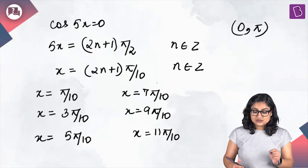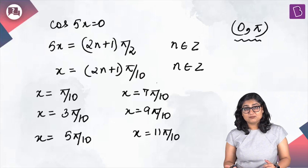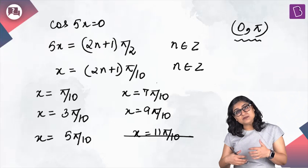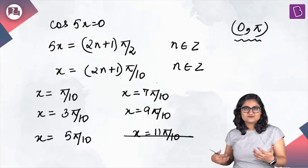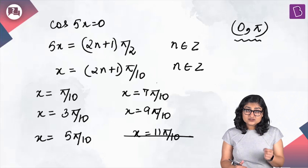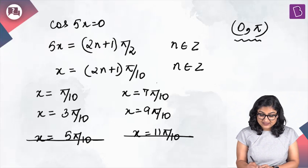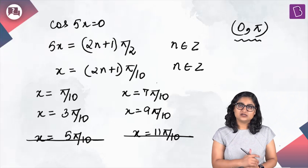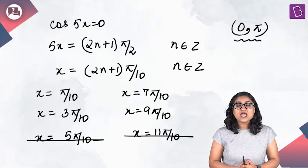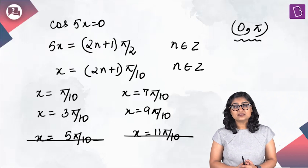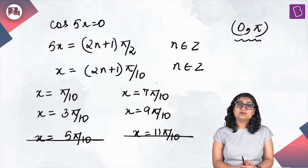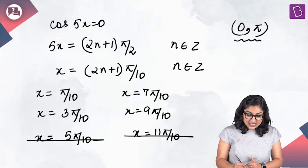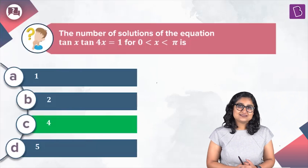We reject x = 11π/10 and beyond (outside (0,π)), and also reject x = 5π/10 = π/2 because tan is undefined there. That leaves 4 valid solutions: π/10, 3π/10, 7π/10, and 9π/10. Hence the answer is option C.